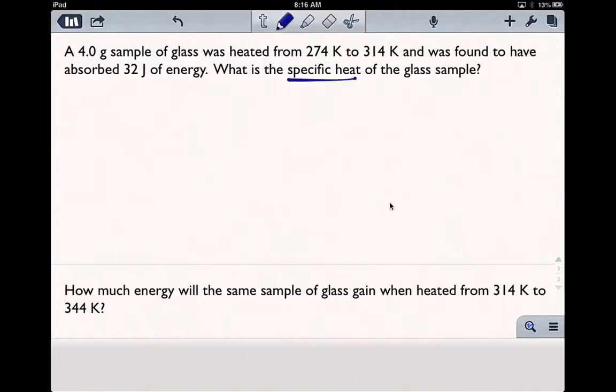Here we are looking for specific heat, which is C sub P. That's our unknown. So we're going to use Q equals m C sub P delta T.